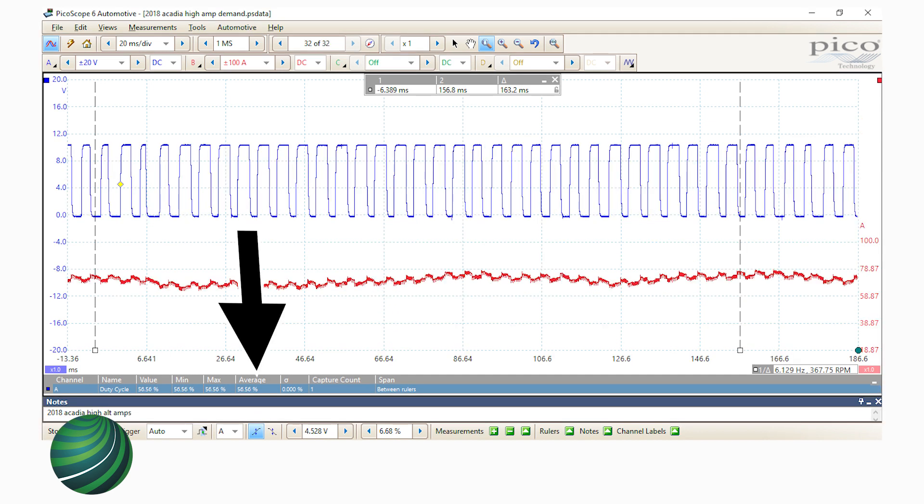Pattern shown here is high load on the charging system. The duty cycle is high, about 55%, indicated by the wave pattern. The red current trace indicates the amperage output of the alternator, about 70 amps average.